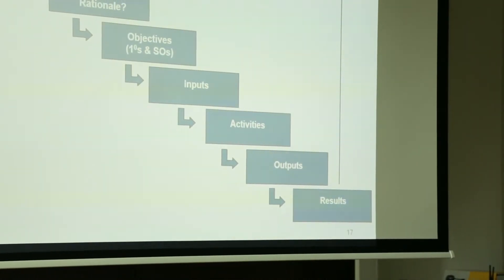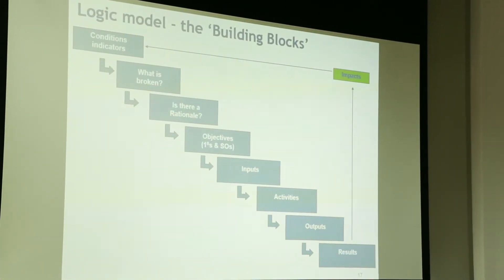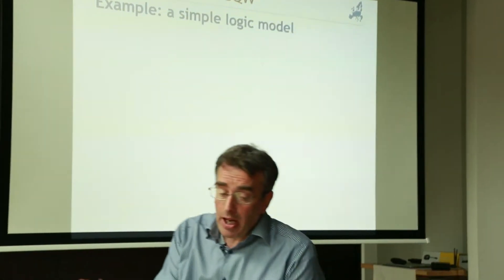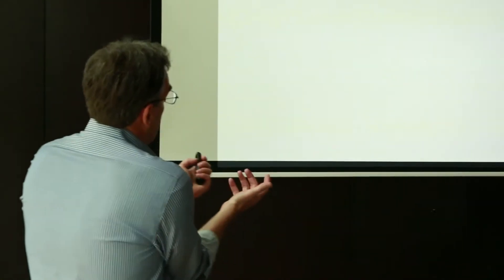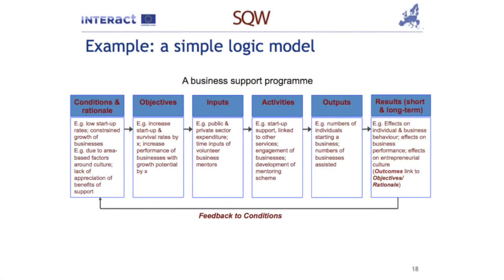So that's the broad building blocks of a logic model. And of course that then finds different depictions, different forms, different presentations in the real world. Here's a simple looking logic model. So rather than running from here down to here, it now runs from here to here. This is for a business support program - conditions and rationale - simple logic model.